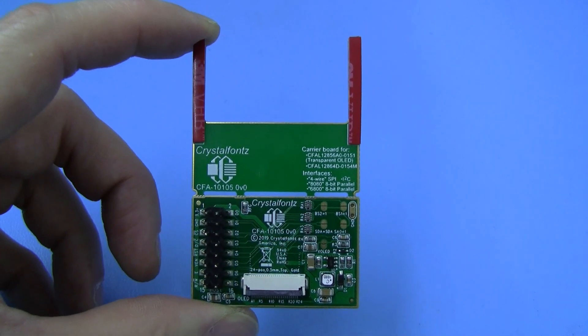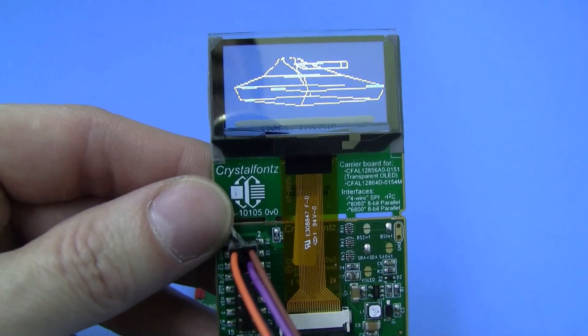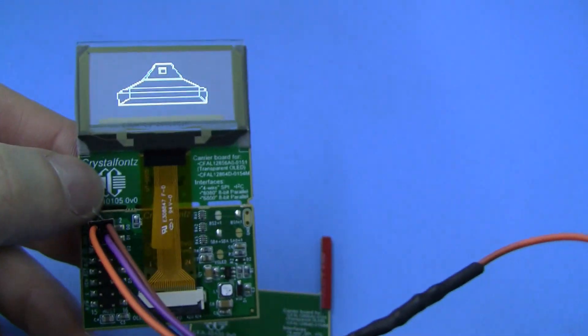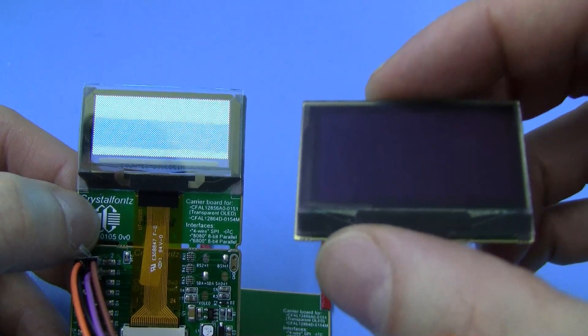This OLED breakout board was designed specifically for our 128 by 56 transparent OLED display and our 128 by 64 OLED display which we have in white and yellow.